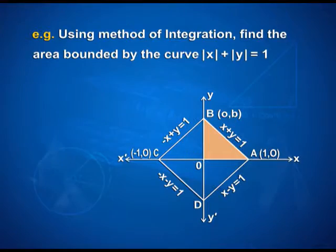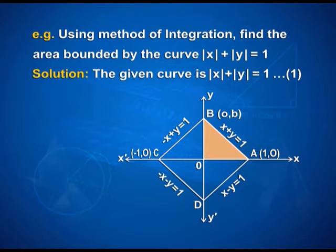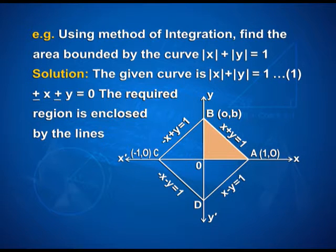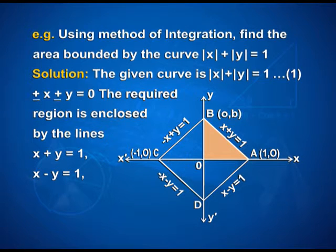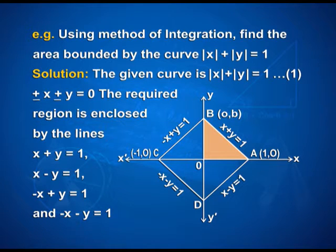Another example: using the method of integration, find the area bounded by the curve |x| plus |y| is equal to 1. As the given curve is |x| plus |y| equal to 1, we can write ±x ± y equal to 1. The required region is enclosed by the lines x plus y equal to 1, x minus y equal to 1, minus x plus y equal to 1, and minus x minus y equal to 1.